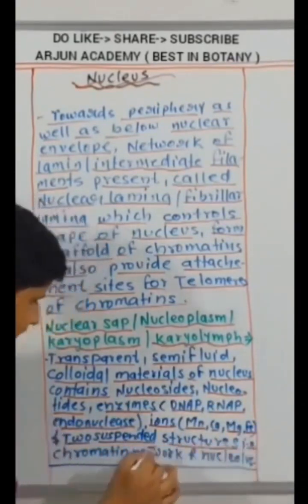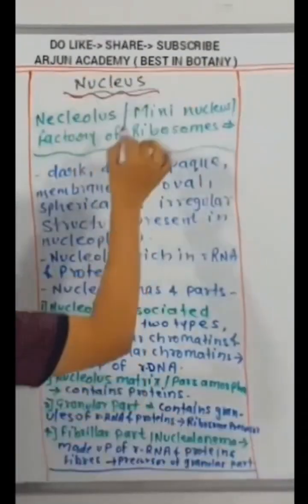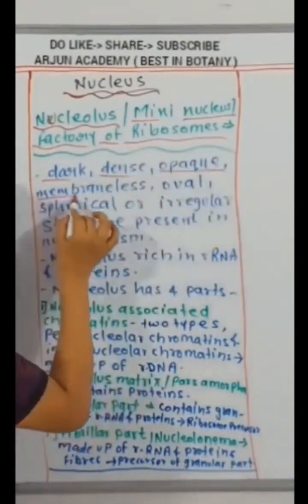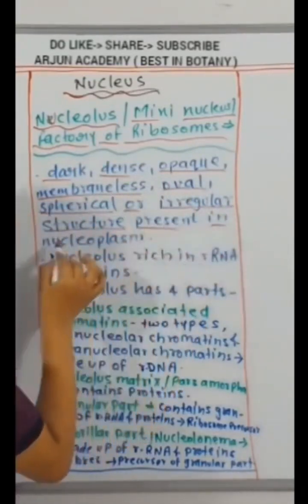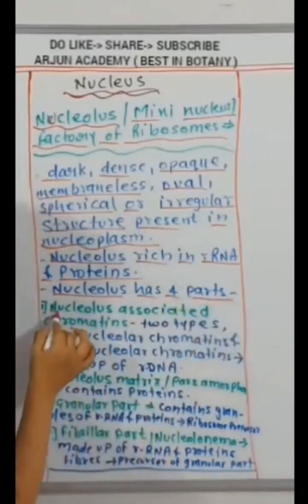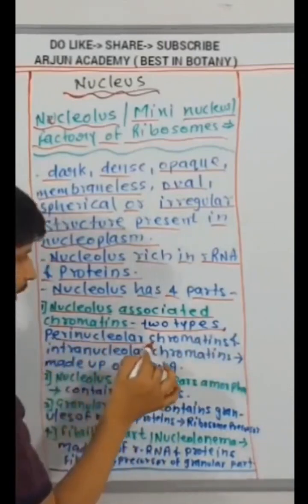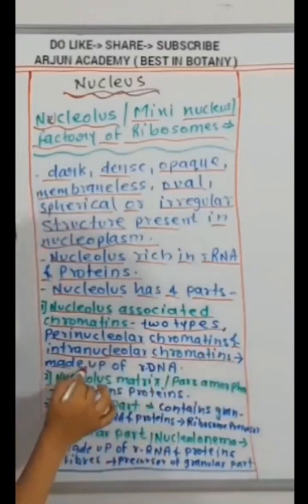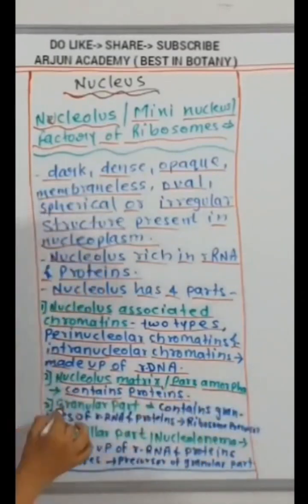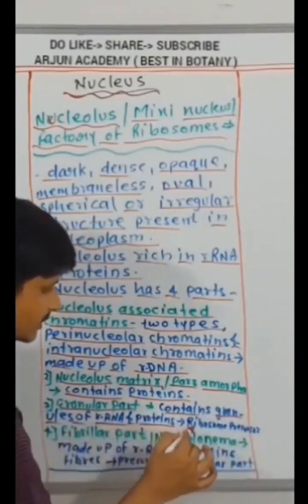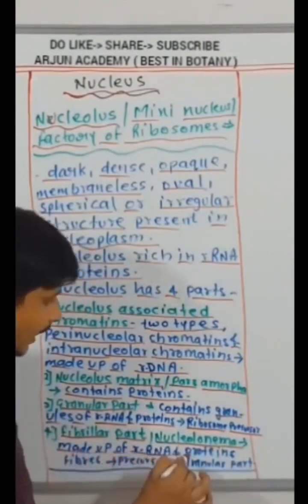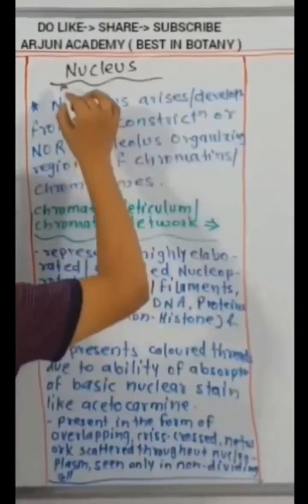Nucleolus, mini-nucleus, factory of ribosomes. Dark, dense, opaque, membraneless oval, spherical or irregular structure present in nucleoplasm. Nucleolus, rich in RNA and proteins. Nucleolus has four parts. Nucleolus associated chromatin, two types: perinucleolar chromatin and intranucleolar chromatin made up of rDNA. Nucleolus matrix or pars amorpha contains proteins. Granular part contains granules of rRNA and proteins represent ribosome precursor. Fibrillar part or nucleolonema made up of rRNA and proteins fibers represent precursor of granular part. Nucleolus arises or develops from secondary constriction or NOR, nucleolus organizing region of chromatins or chromosomes.